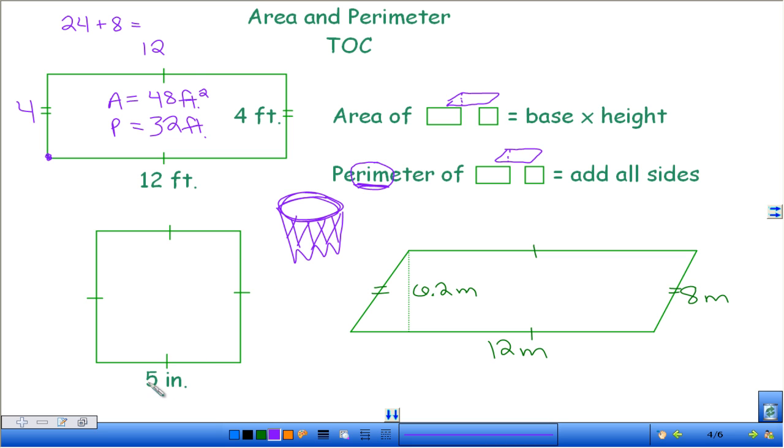Down here, we have 5 inches, but I have one dash on every single one of these sides, which we talked about since all those dashes are the same. They're all congruent, which means all of these are 5 inches. So our area, base times height, so 5 times 5 is 25, and then inches times inches is inches squared. And then our perimeter, we add all of our sides, so 5 plus 5 plus 5 plus 5 is 20 inches. Questions so far? That's kind of a review of Friday.